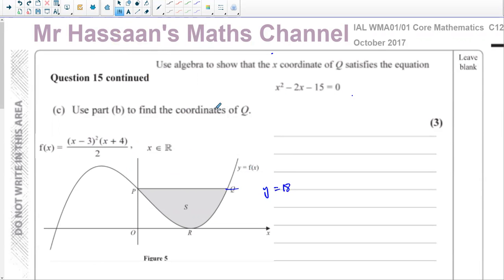And then we equated the equation to y equals 18 to find out, which gave us this equation. This was part of the equation that it gave us, which would help us to find where this line y equals 18 intersects with P and Q. So now they're asking us to find the coordinates of Q using this equation that we already found in part B.